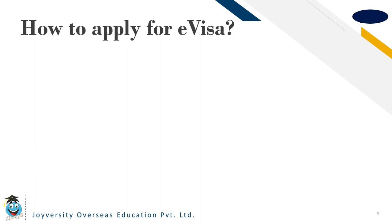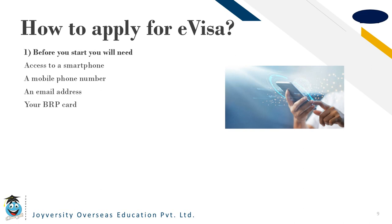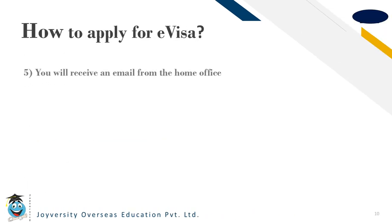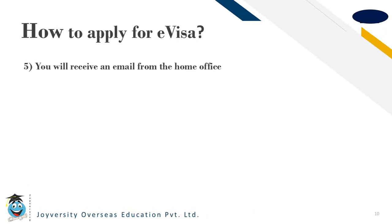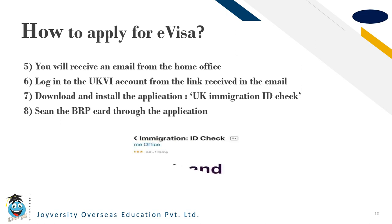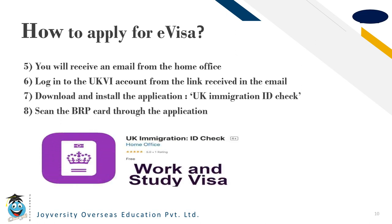How to apply for an e-visa: before you start, you will need access to a smartphone, a mobile phone number, an email address and your BRP card. Click on the link given below to start the application process. Fill in the details and create a UKVI account. You will receive an email from the Home Office — log in to your UKVI account from the link received in the email. Download and install the application known as UK Immigration ID Check, then scan your BRP card through the application.